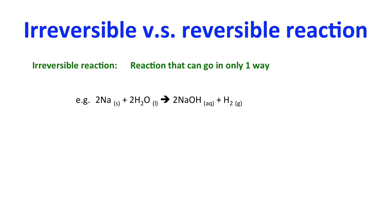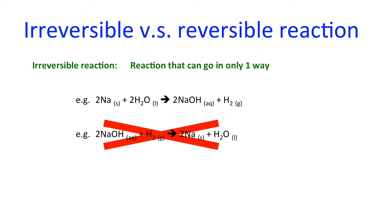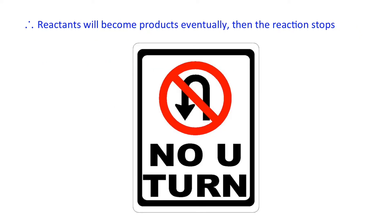For example, a sodium metal reacts with water to form sodium hydroxide and hydrogen. In this reaction, the forward reaction is no problem. But if you want to go in the reverse way — adding sodium hydroxide and hydrogen to get back the sodium metal and water — that is impossible. That means there is no reverse reaction, and all the reactants will become product eventually.